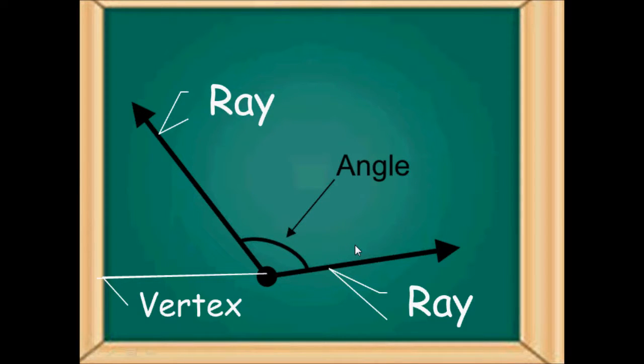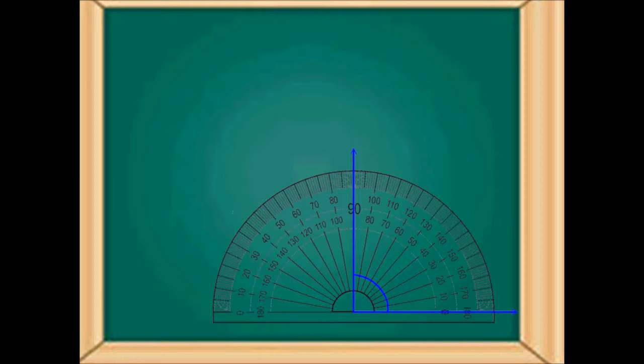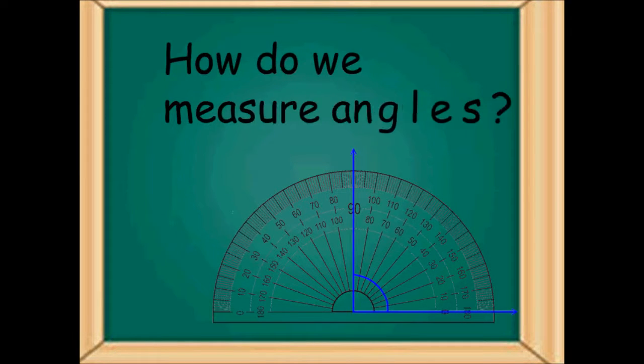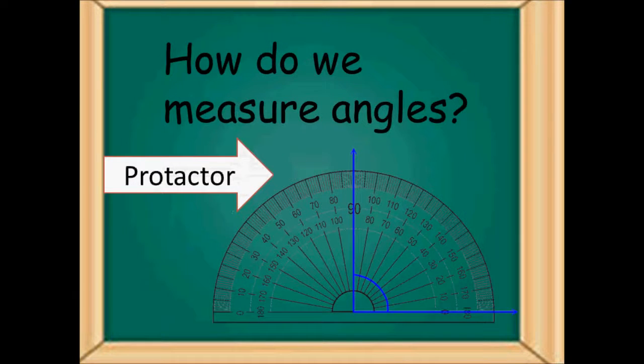How do we measure angles? Angles are measured with a special tool that is called a protractor. The protractor, as we have over here, comes in degrees which help us to measure the angles.